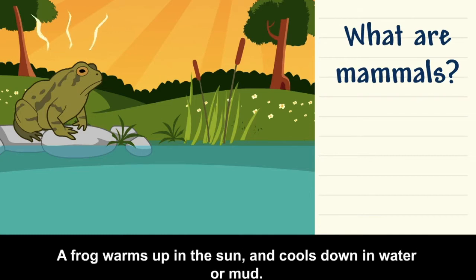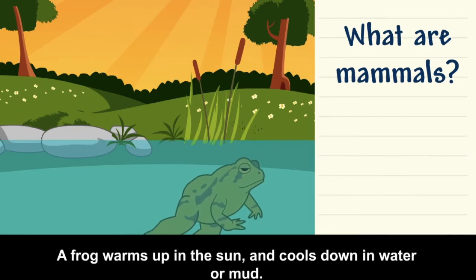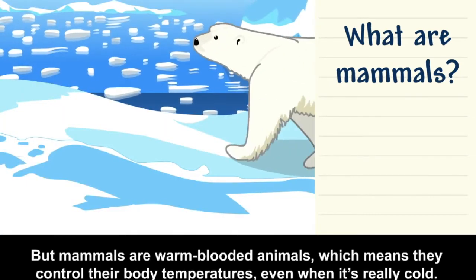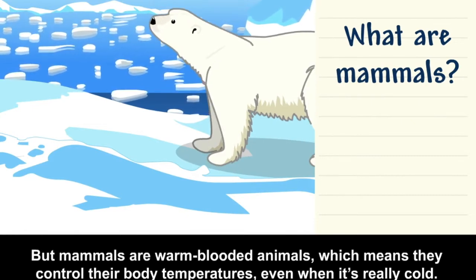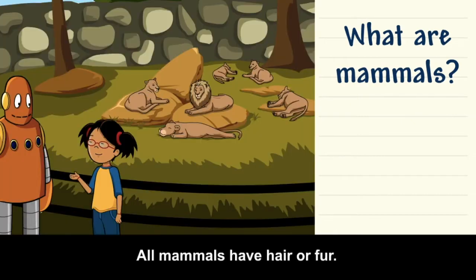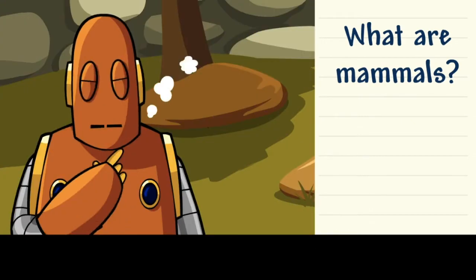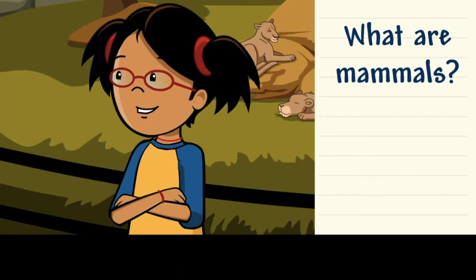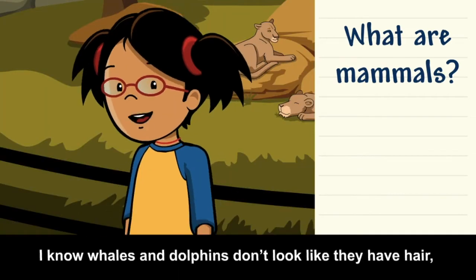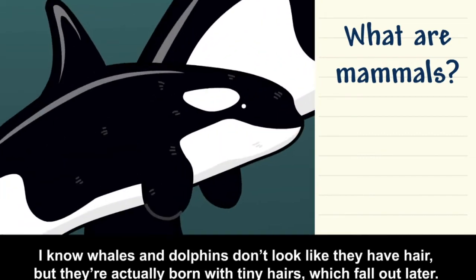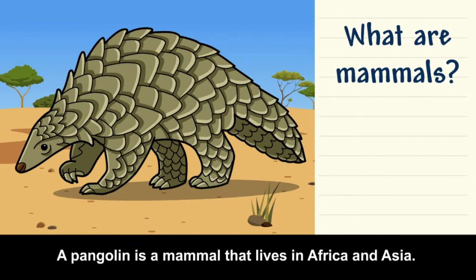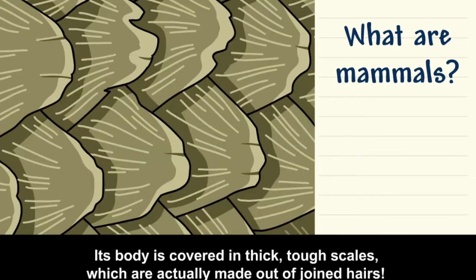Cold-blooded animals, like frogs, use the environment to help control their body temperatures — a frog warms up in the sun and cools down in water or mud. But mammals are warm-blooded animals, which means they control their own body temperatures even when it's really cold. All mammals have hair or fur. Whales and dolphins are actually born with tiny hairs, which fall out later. A pangolin is a mammal whose body is covered in thick, tough scales, which are actually made of joined hairs.